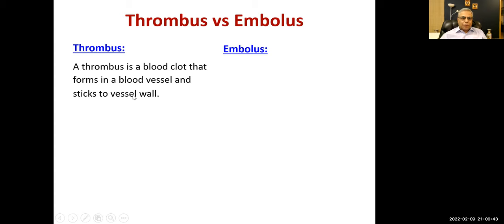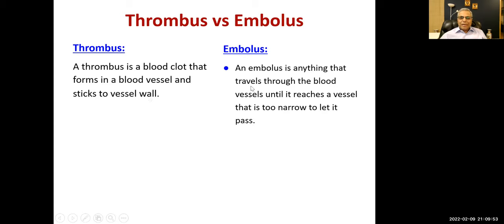A thrombus is a blood clot that forms in a blood vessel and sticks to the vessel wall — it is not moving or flowing with the blood. An embolus is anything that travels through the blood vessel until it reaches a vessel too narrow to let it pass. Examples include air emboli, pulmonary embolism from a blood clot, fat embolism, and amniotic fluid embolism.